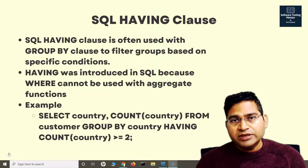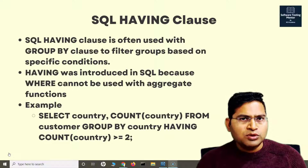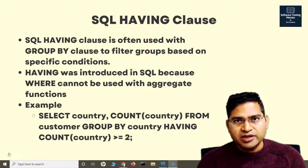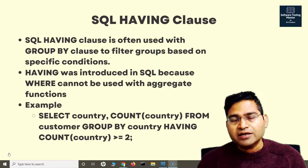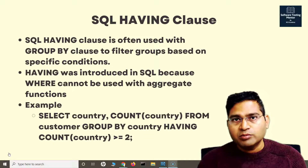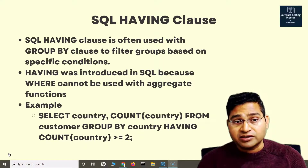Now, why do we need the HAVING clause when we already have the WHERE clause? The reason is because the WHERE clause cannot be used with aggregate functions.